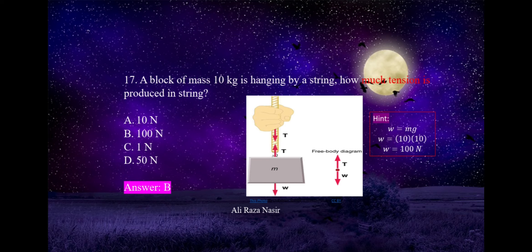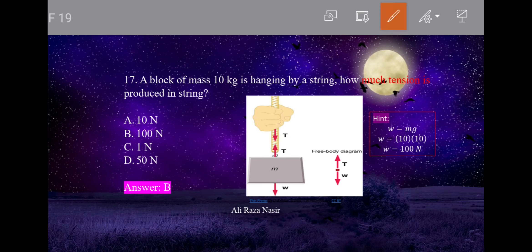A block of mass 10 kg is hanging by a string — how much tension is produced in the string? When a body is suspended and at rest, net force is zero. The tension in the string equals the weight of the body. T = W = mg = 10 × 10 = 100 N.